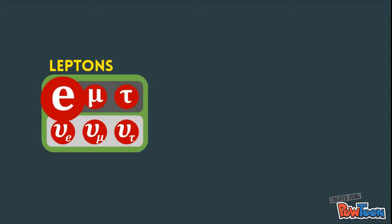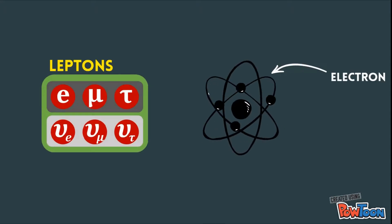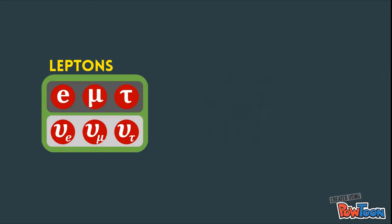There are 3 charged leptons: the electron that orbits atomic nuclei forming atoms and its two heavier siblings, the muon and the tau. Finally, there are 3 neutral leptons, the neutrinos.